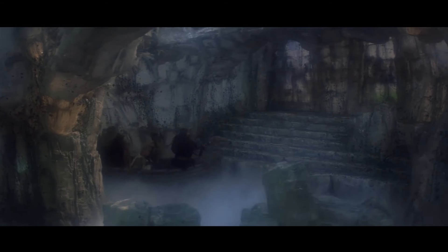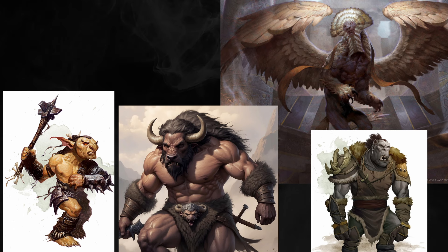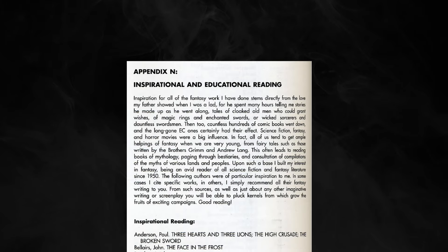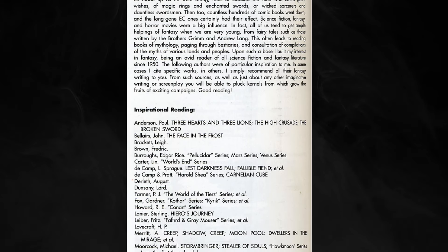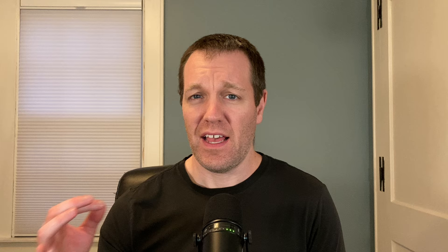When Gary Gygax and Dave Arneson were developing Dungeons and Dragons, they borrowed a lot of ideas from many different sources. It's pretty evident throughout the entire DNA fabric of D&D. If you need a quick example, take a look at monsters — sphinxes, minotaurs, orcs, and goblins were all cribbed from mythology or other fantasy fiction works. In the 1979 Advanced Dungeons and Dragons Dungeon Master's Guide, Gary Gygax published the forever famous Appendix N.